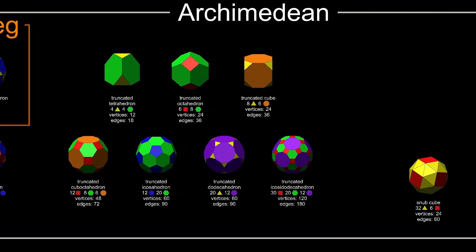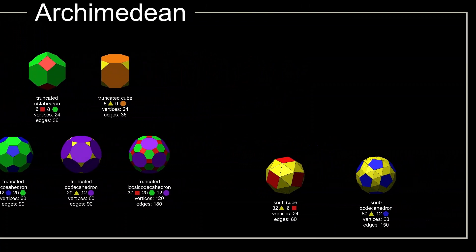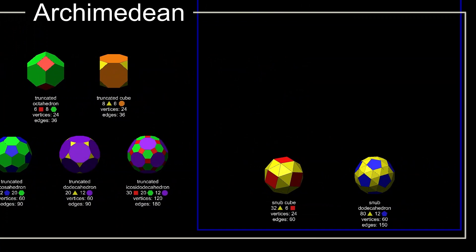Another subcategory is the snub polyhedra. These have a characteristic twisted appearance and are geometrically more complex. The two snub Archimedean solids, the snub cube and the snub dodecahedron, are the best known.